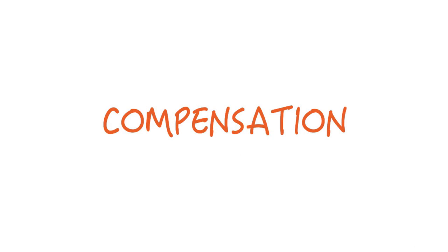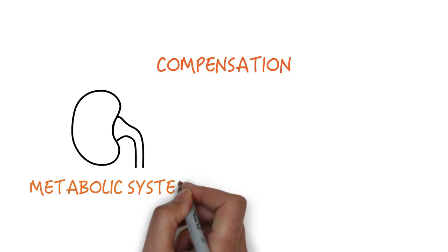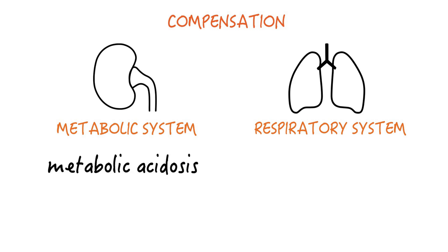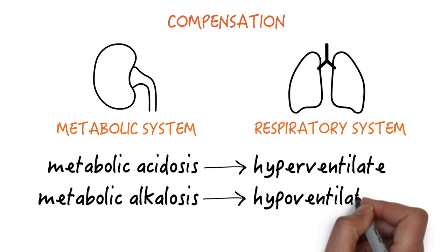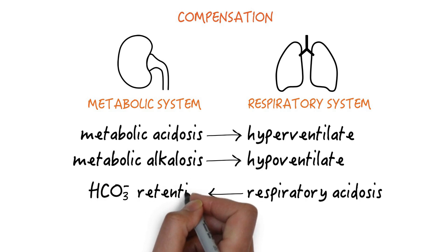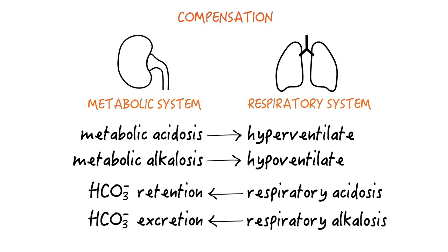Compensation refers to the fact that the lungs will try to compensate for a metabolic problem by hyper- and hypoventilating, and the kidneys will try to compensate for a respiratory problem by excreting or retaining bicarb. The kidney represents the metabolic system and the lungs represent the respiratory system. When there's metabolic acidosis the lungs will hyperventilate, and when there's metabolic alkalosis the lungs will hypoventilate. When there's respiratory acidosis the kidneys will cause bicarb retention, and when there's respiratory alkalosis the kidneys will cause bicarb excretion. That's what the whole concept of compensation is all about.